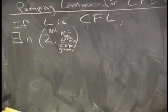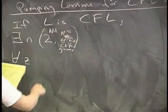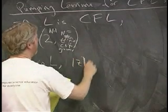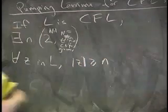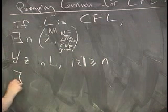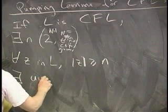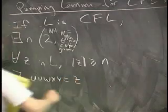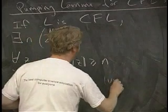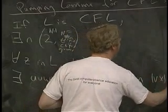So there exists an N such that for every string, for every Z in L where the string is bigger than N, the string is long enough, bigger than that size, there exists U, V, W, X, Y equals Z. So there exists a way to write the string like this such that V, W, X is less than or equal to N, V, X is greater than or equal to 1.